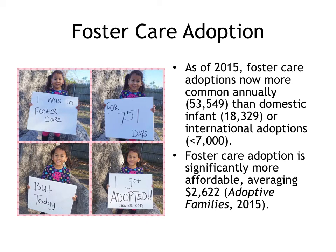The final method of building a family through adoption is adoption through foster care. As of 2015, foster care adoptions were significantly more common in the United States than other forms of adoption. More than 53,000 children annually are now adopted through the U.S. foster care system, compared to less than 20,000 through traditional adoption agencies and less than 7,000 through international adoptions. Foster care adoption is significantly more affordable, averaging less than $3,000 in total expenses. Children who have spent time in the foster care system in Texas are also eligible for free tuition at Texas public colleges and universities.